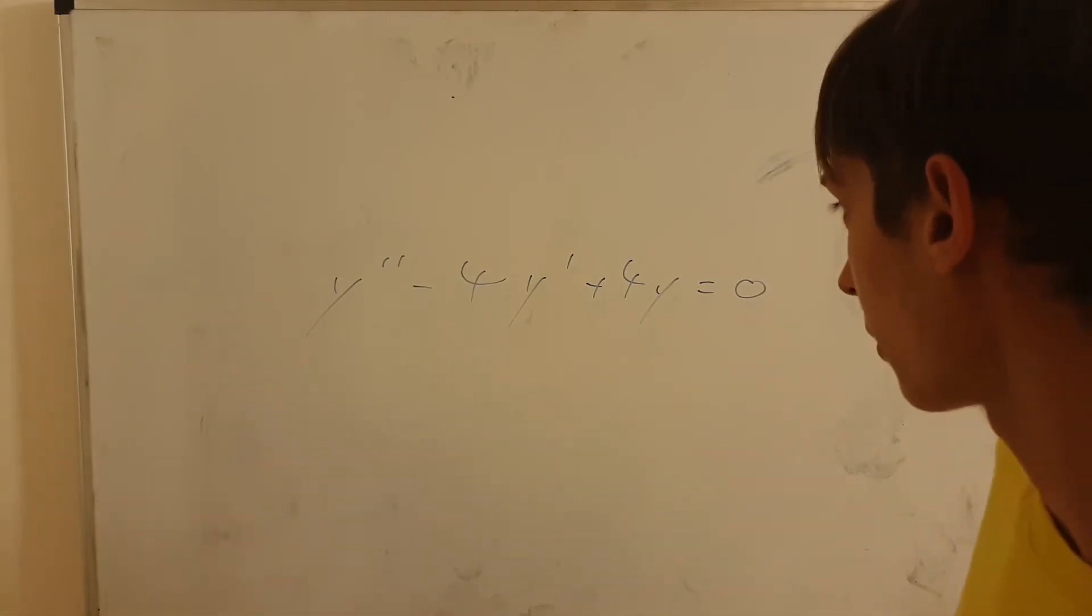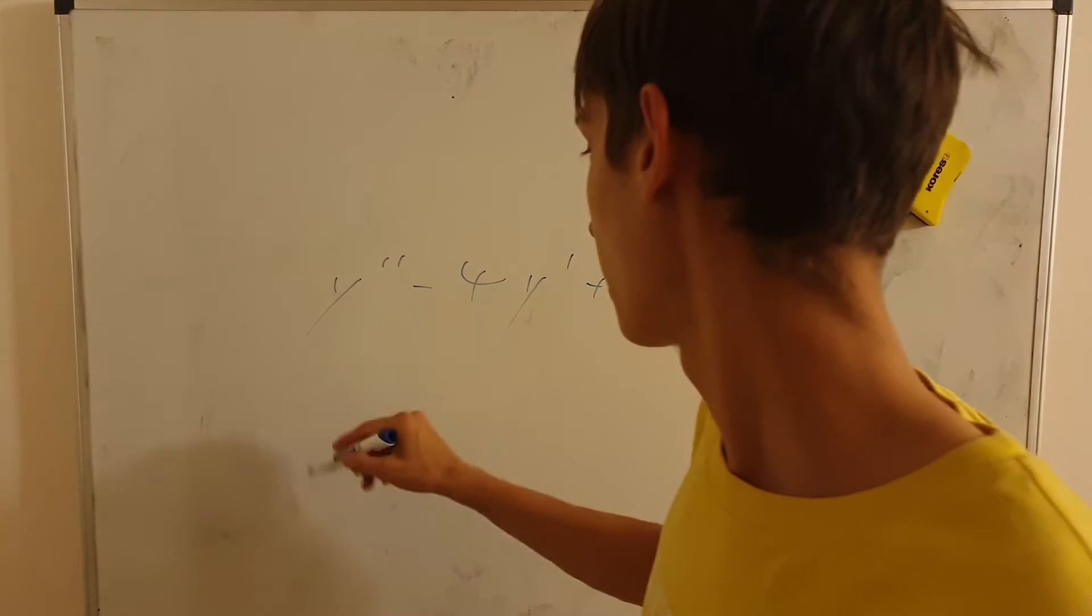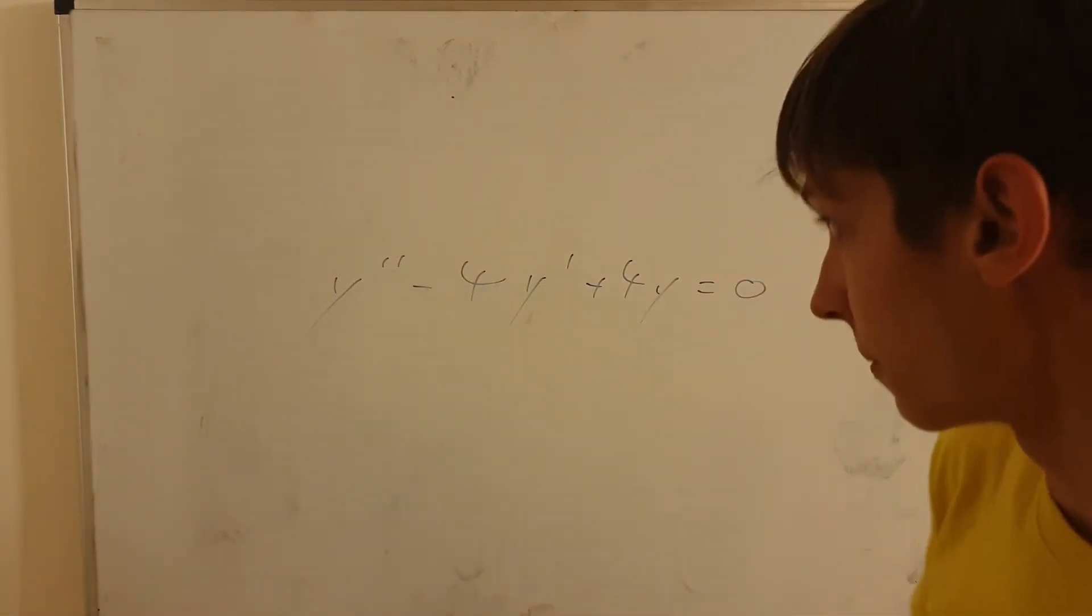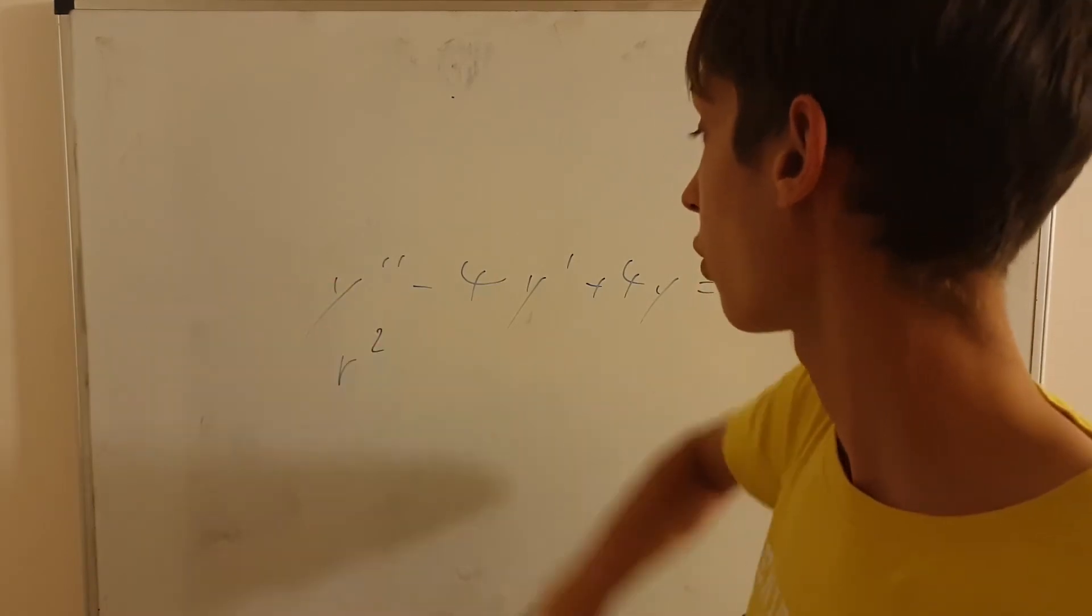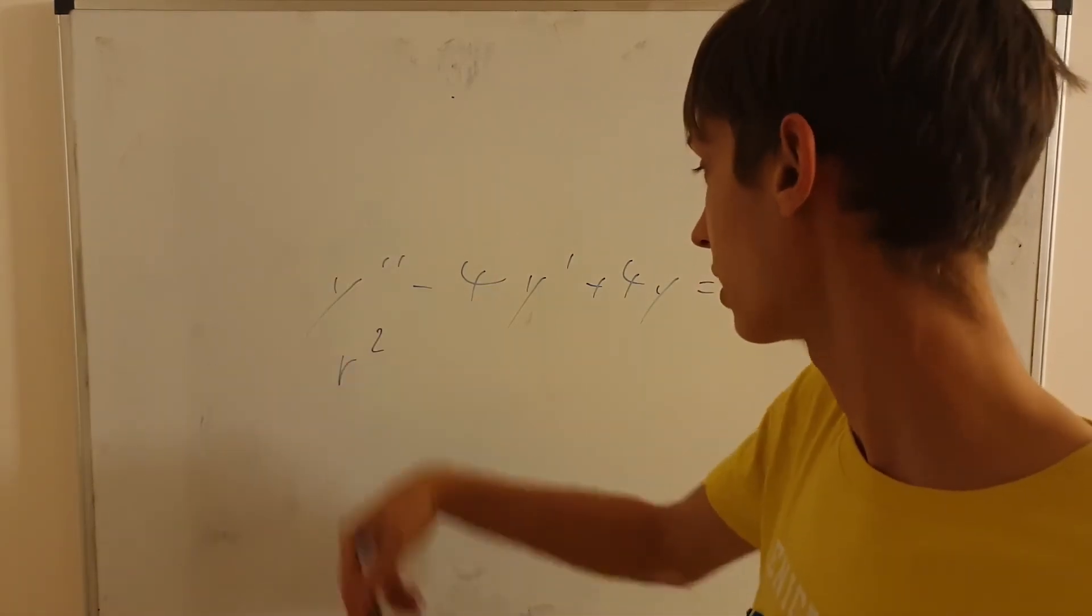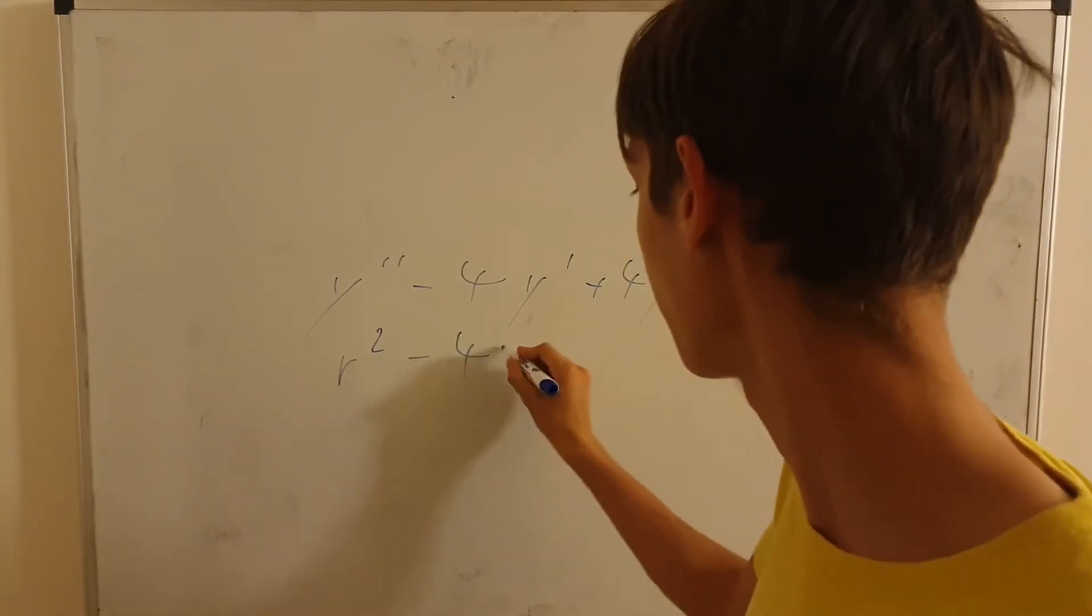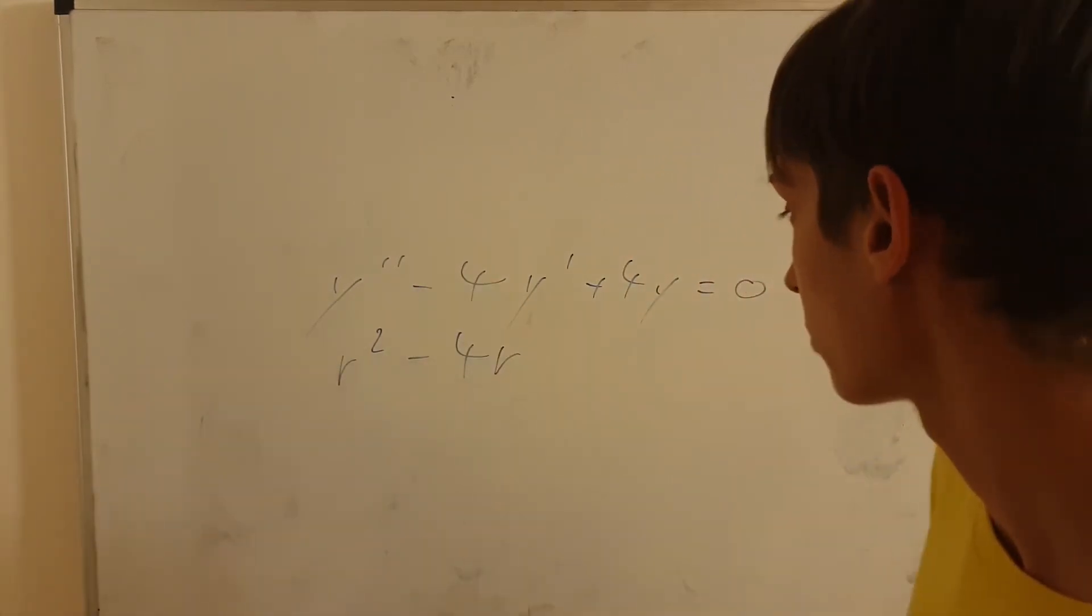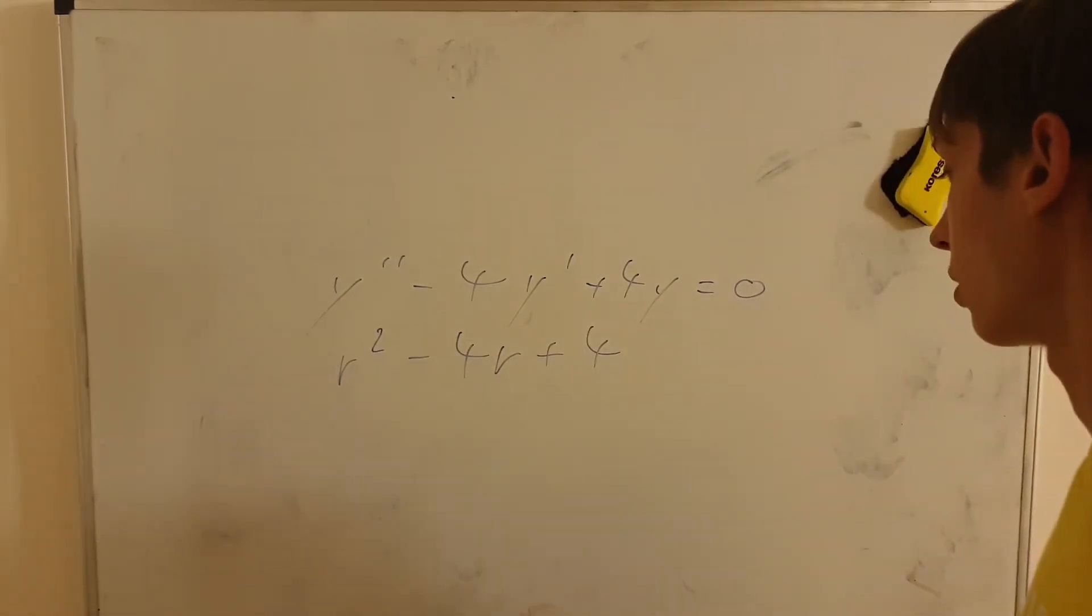It's the solution for this kind of equations, but the general idea is you can rewrite it as a quadratic equation where the double prime is r squared. Of course, respect the coefficient, so here's one, but y prime is just r, coefficients are kept, the -4, and then when there's just y, it's just 4.